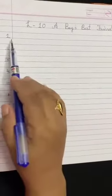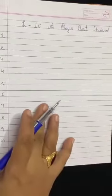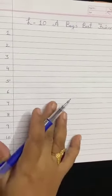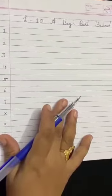Now write down serial number 1 to 10. After writing this serial number 1 to 10, get ready for your dictation. I am going to repeat one word three times.